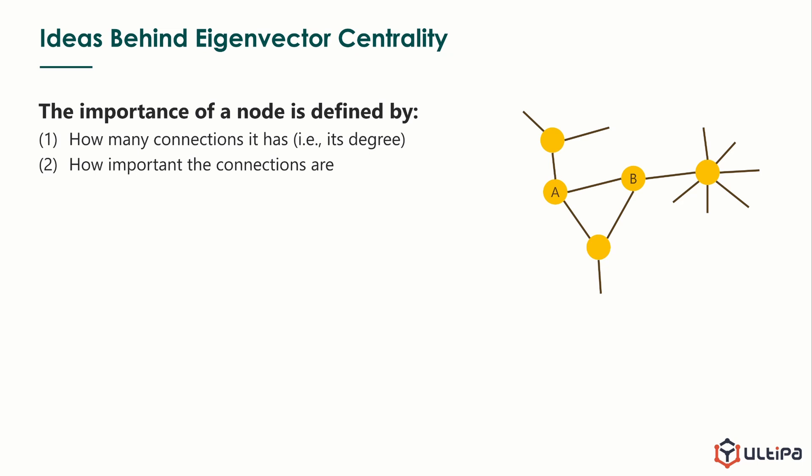First, how many connections it has. In this graph, node A and node B both have degree of 3, but we won't say that they are equally important, as we see that one of the connections of node B is very strong, and it should make node B more important than node A.